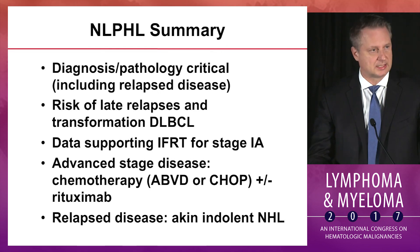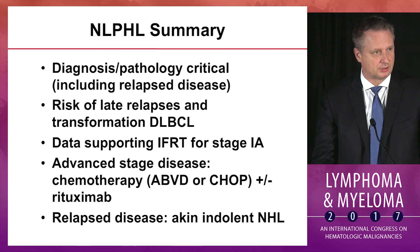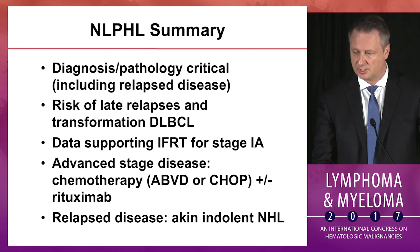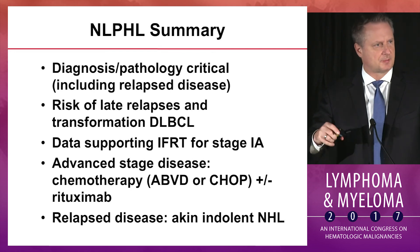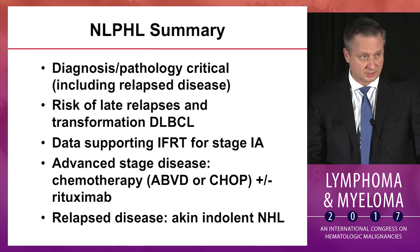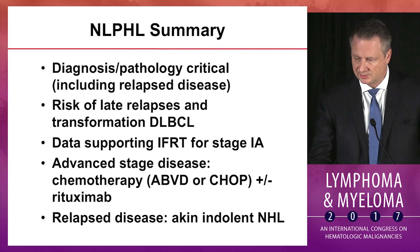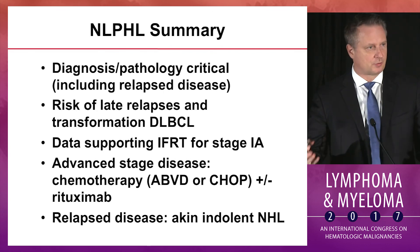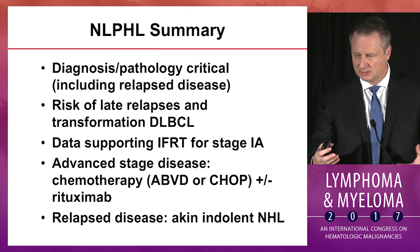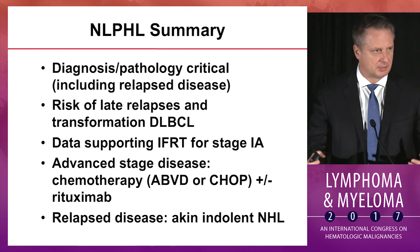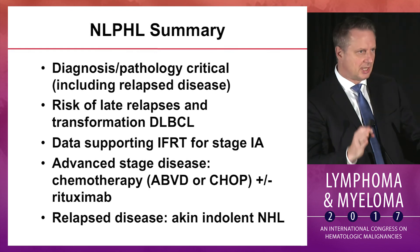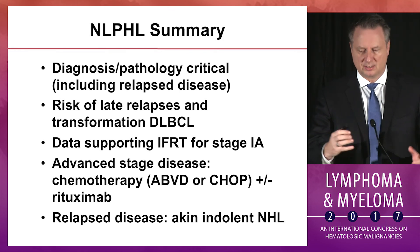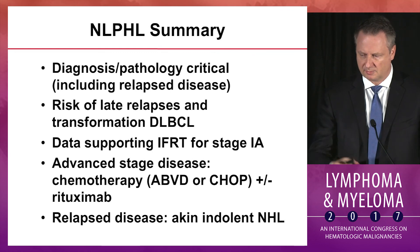In summary: diagnosis and pathology are critical. It's not a common lymphoma and not even a common Hodgkin lymphoma. Be cognizant of late relapses and especially transformation to large cell. There is data supporting resection and involved-field radiation for early-stage disease; advanced-stage disease is treated with systemic chemotherapy — dealer's choice in regimen — and also dealer's choice on whether to include rituximab. Relapse disease should be viewed more like an indolent lymphoma unless there is aggressive transformation.